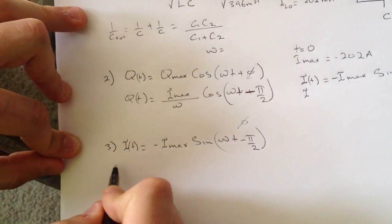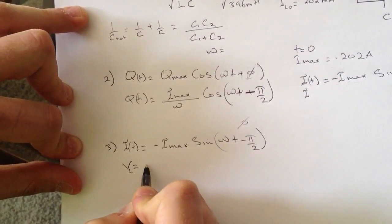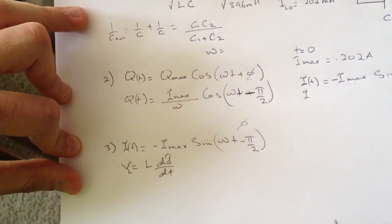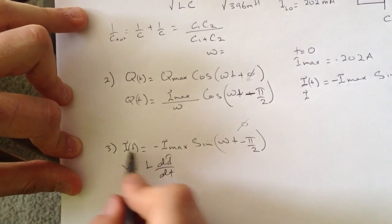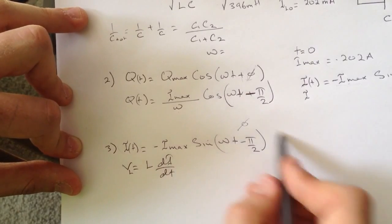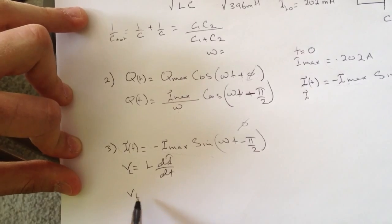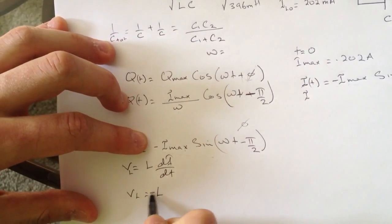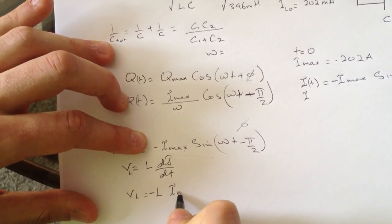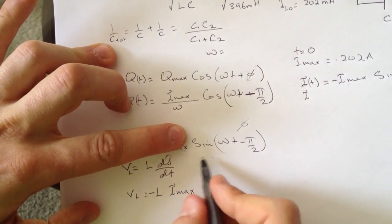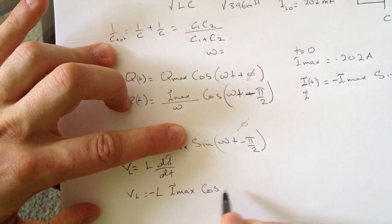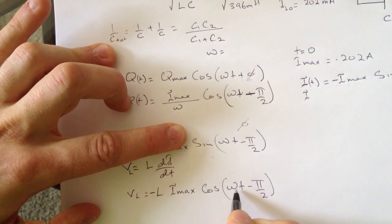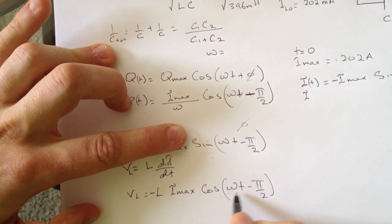If we go back here, the voltage for the inductor is L dI/dt. So this is the I, and then we're going to differentiate this one now. The L will be L times, when you differentiate this part, it will be negative, and then I max.